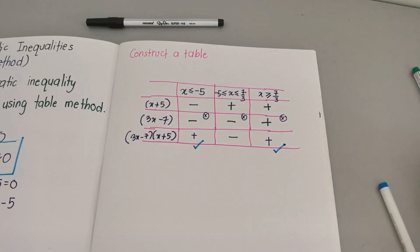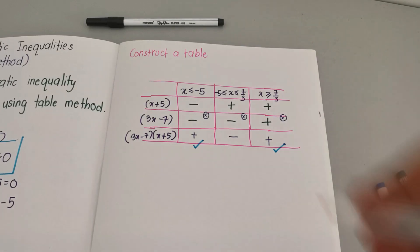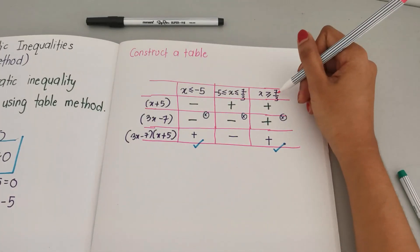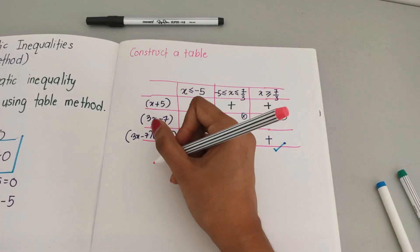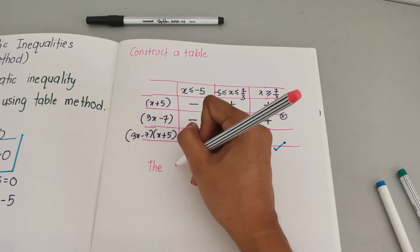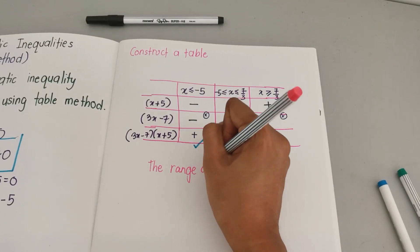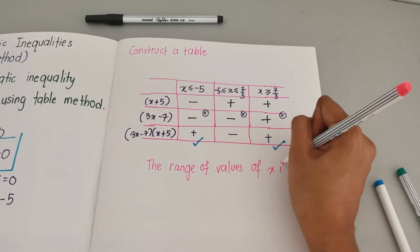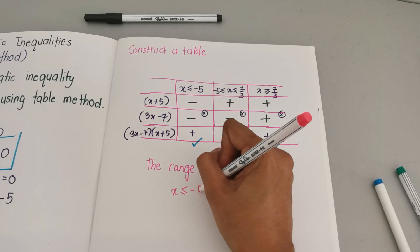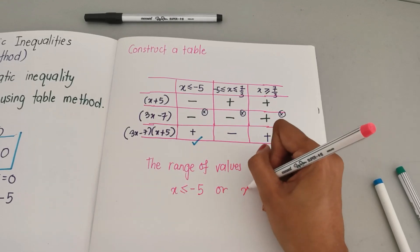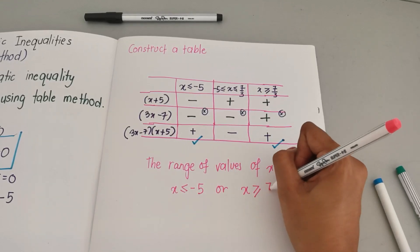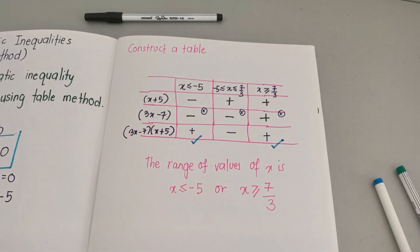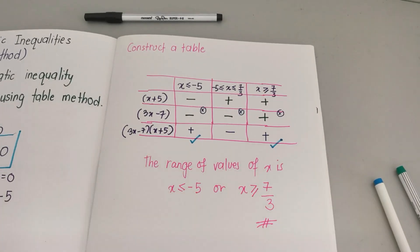Where is positive? This is positive and this is positive, so that means our answer, we can immediately choose this and this. So our final answer, the range of values of x is x less than equals to negative 5 or x greater than and equals to 7 over 3. We have found our range.